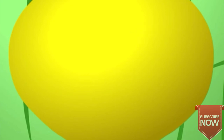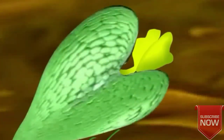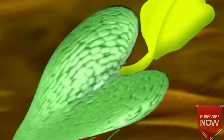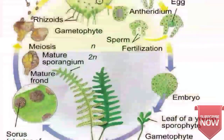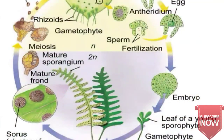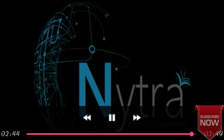The oospore divides and re-divides to form the embryo. However, with the development of the green leaf and root, and with the decay of the prothallus, the sporophyte develops into an independent plant body.